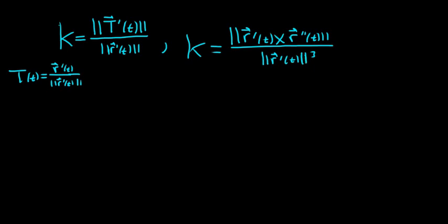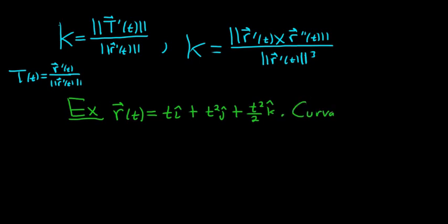So let's go ahead and do an example using one of these formulas. So let's try maybe, how about this one. We have r(t), here's our vector valued function, and it's equal to ti + t²j + (t²/2)k. And the question is to find the curvature of this vector valued function, of the curve given by this vector valued function.